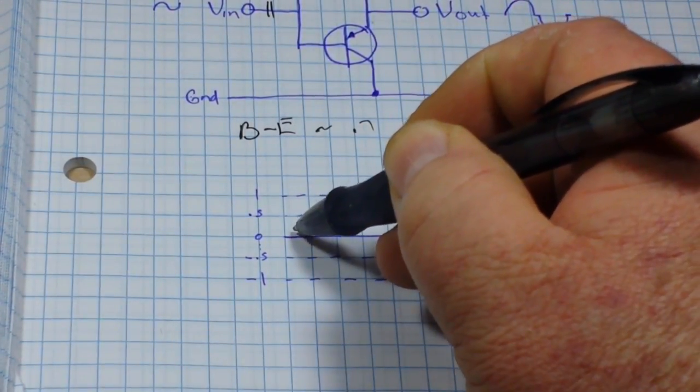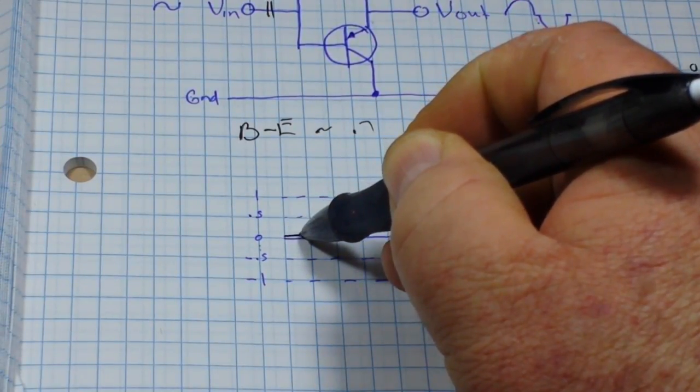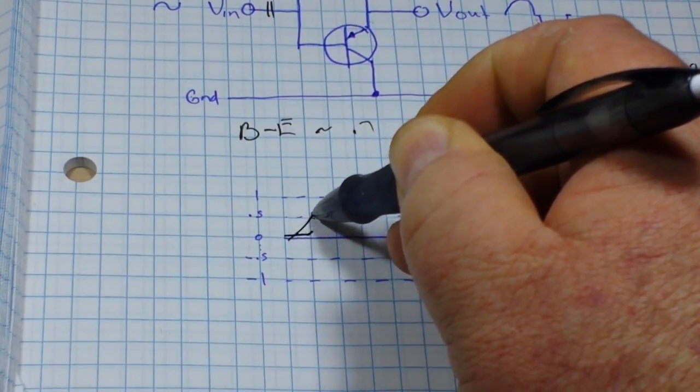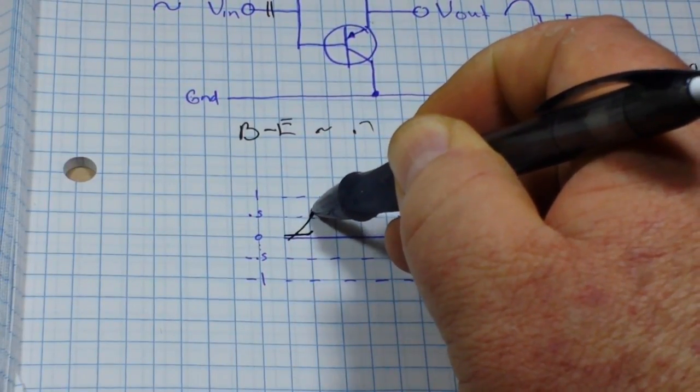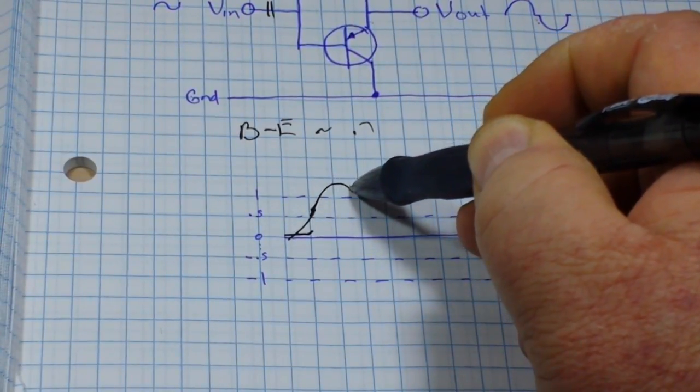So as our signal crosses zero volts, there is not going to be any conduction at all until we cross this point right about here, and then it's going to conduct.